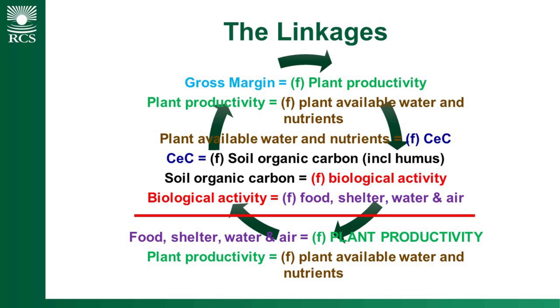Biological activity is a function of four things: food, shelter, water, and air. And it's exactly the same for us — those same four things are just as critical for our survival as they are for biological survival. You'll notice that food, shelter, water, and air is a function of plant productivity, which is a function of plant-available water and nutrients. So what you can see is that this actually is a cycle. As we start to plug the gaps within that cycle, the whole system can start to regenerate — the way that Charlie was talking about earlier, about nature knowing what to do.